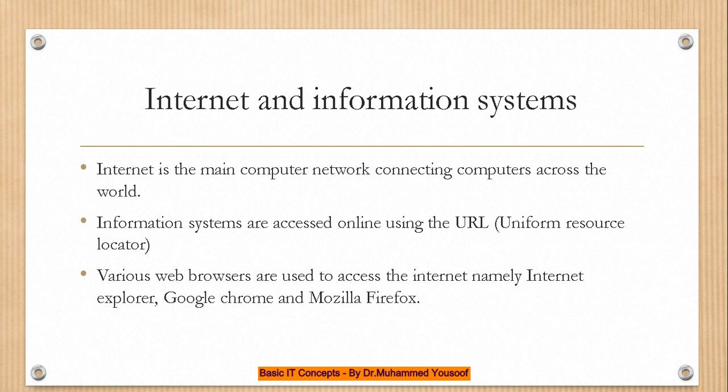When we talk about networking, the first thing that comes to mind is the Internet — the biggest computer network, which connects all computers across the world. Information systems are accessed online using a URL (Uniform Resource Locator). For example, when you open Google Chrome and type www.du.edu.om, that is the URL — the web address — and your website is located. You connect to the server of that website through the URL using web browsers such as Google Chrome, Mozilla, and Internet Explorer. Google Chrome is the most commonly used web browser nowadays.